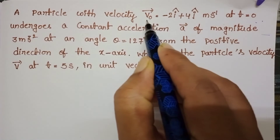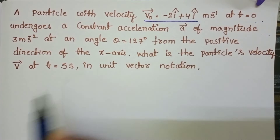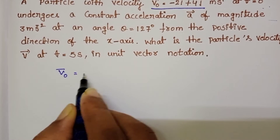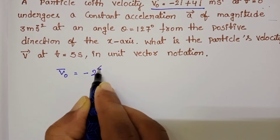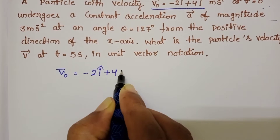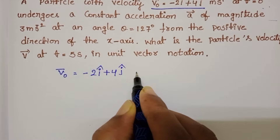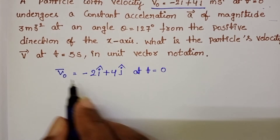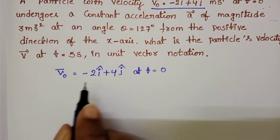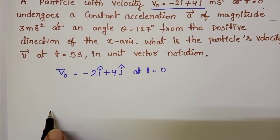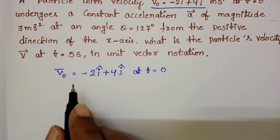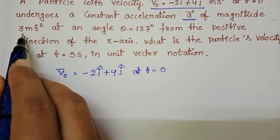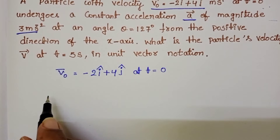In the given question, a particle is moving with a velocity V0 bar equals minus 2i cap plus 4j cap at time t equals 0 seconds. This is the initial velocity of the given particle. After this, the particle undergoes constant acceleration of magnitude 3 meter per second square.